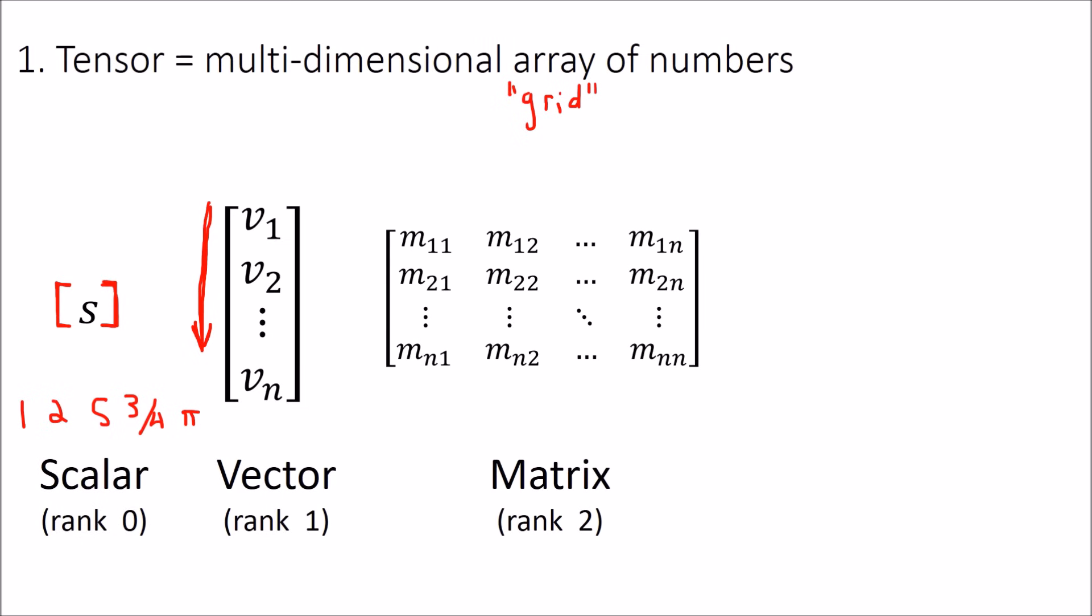Another example you've probably heard of are matrices or rank 2 tensors. We call them rank 2 because they are a two dimensional grid of numbers. So they extend up, down, left to right.